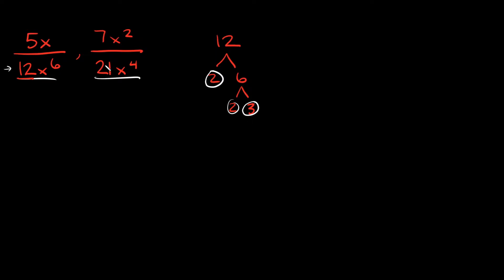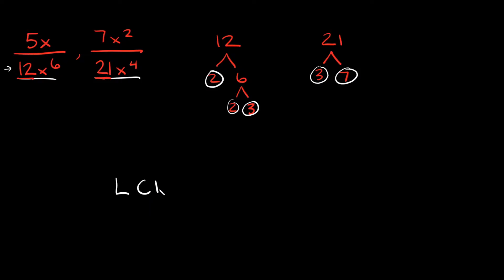So we broke down 12, now let's move on to 21. What are two numbers I can multiply together to get 21? Well, the only ones I can really choose from are 3 times 7. And both of these are prime so we'll circle both of those.